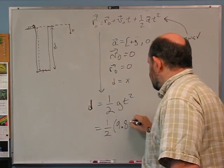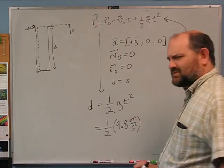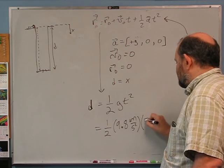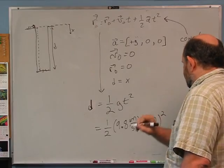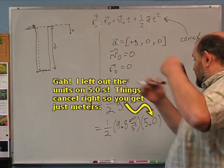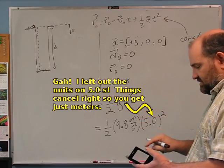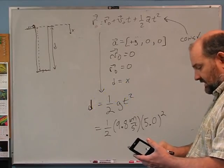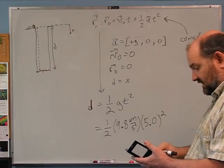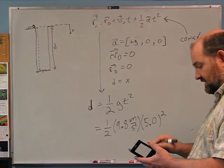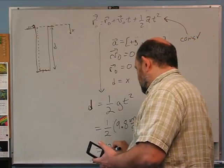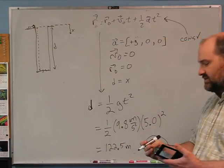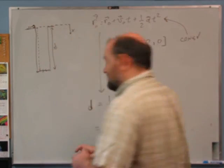Assuming Middle Earth has the same gravitational acceleration as we do — and assuming its physics are the same, which maybe isn't a good assumption given magic — but let's not worry about it. We know the time is 5 seconds, and we'll treat that as good to two significant figures. So: D = ½ × 9.8 × 5² = ½ × 9.8 × 25 = 122.5 meters. With two sig figs, we call it 120 meters is the depth of the well. That was pretty exciting.